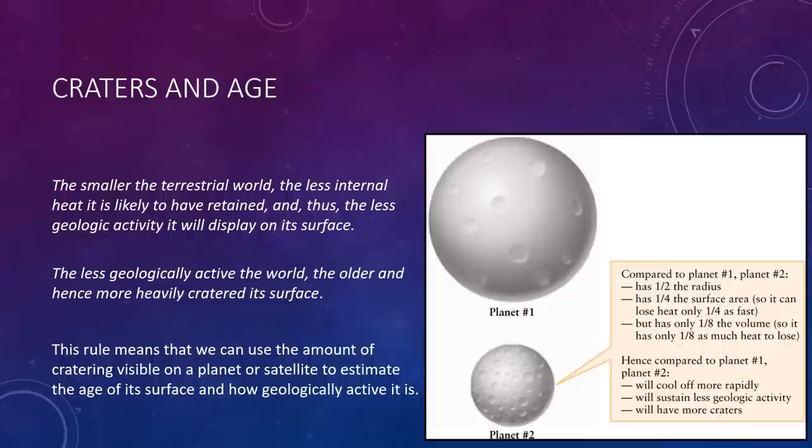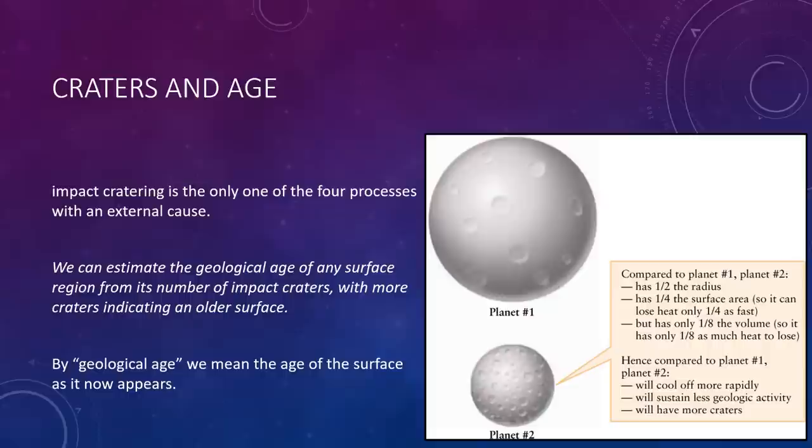A smaller planet has less internal heat, so we know that it must be less geologically active. If that's the case, it must be older because it's been cooling for a long time. And hence, the surface will be more heavily cratered because you won't be seeing volcanoes and things like that reshaping the surface.